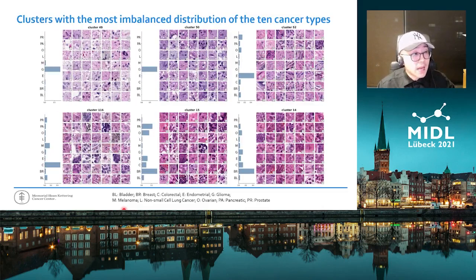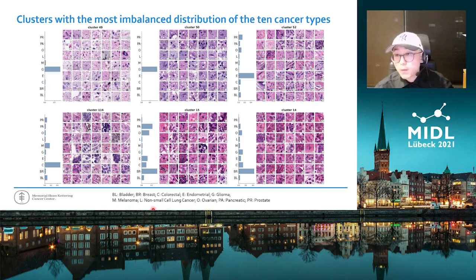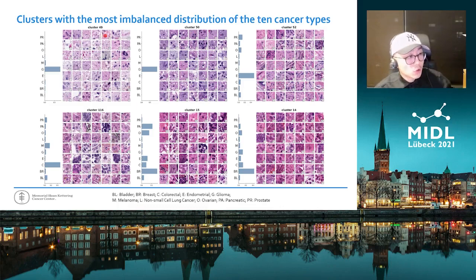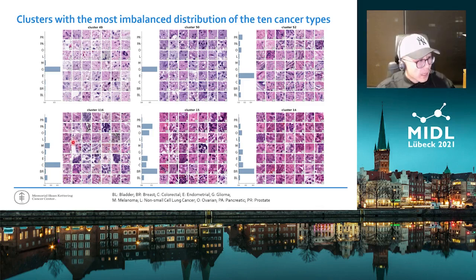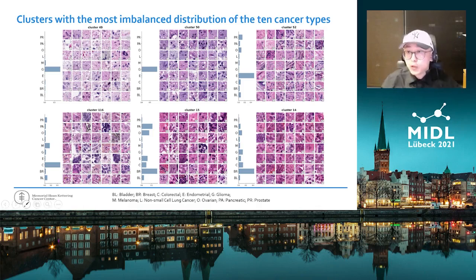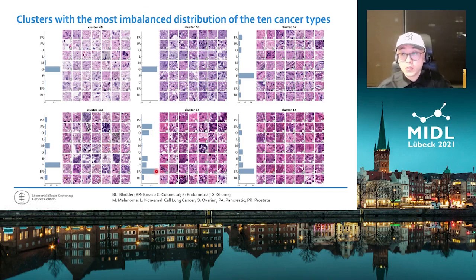We also looked at clusters with the most imbalanced distribution among the 10 cancer types. Clusters 49 and 50 are mostly from glioma, reflecting the fact that glioma is a distinctive non-epithelial malignancy with its own unique cytomorphology. Almost half of cluster 52 belongs to endometrial cancer — most of these nuclei are stroma cells from muscle tissue, which accounts for a large portion of the tissue in endometrial slides. For cluster 116, the major type is colorectal cancer, with many nuclei surrounded by mucins in their cytoplasm, reflecting the feature of tumor cells from the GI tract.